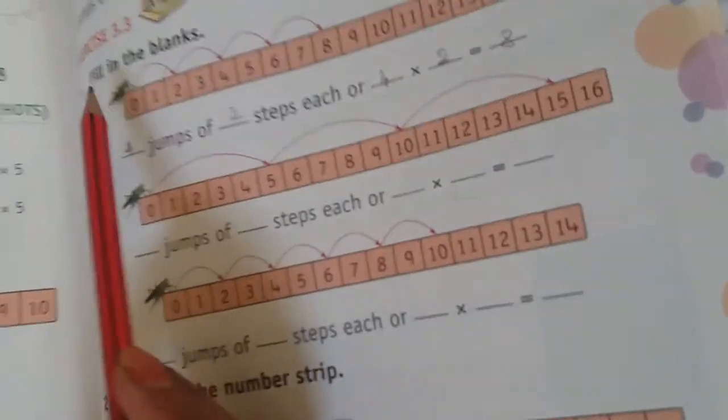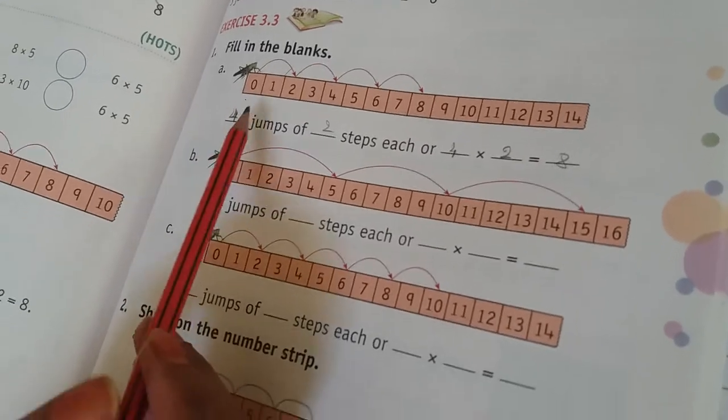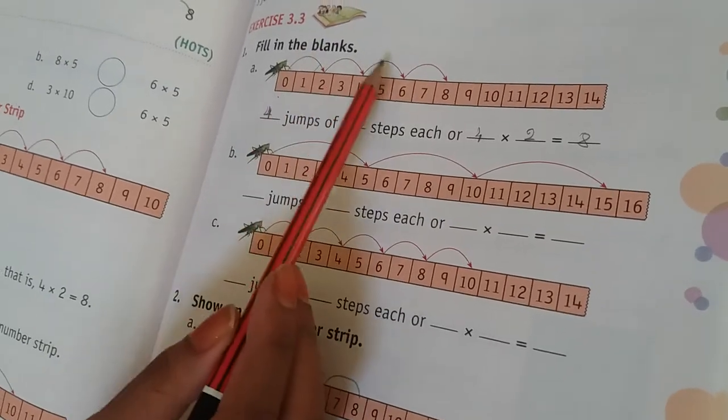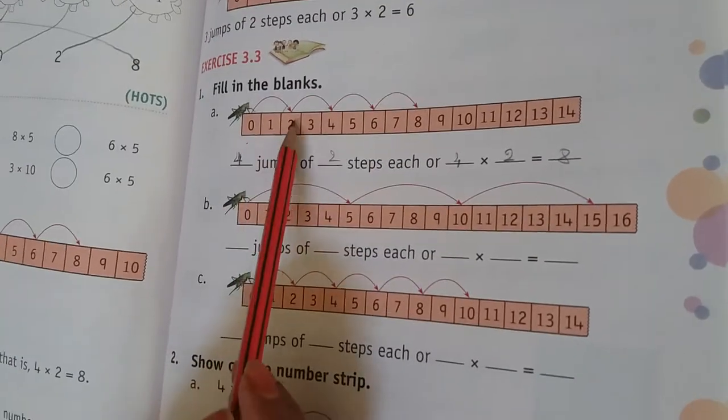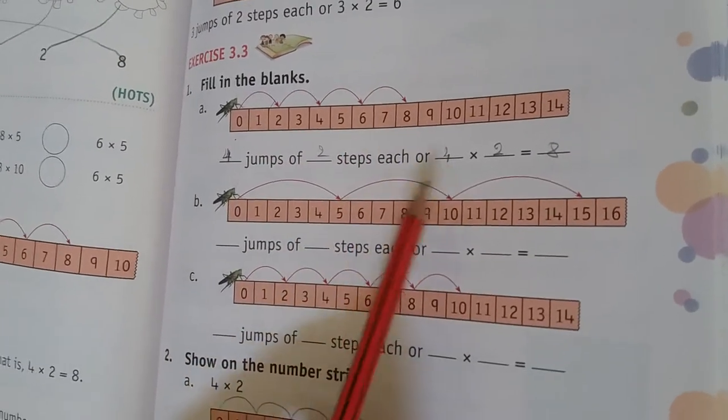Here, fill in the blanks, exercise number 3.3. Grasshopper, 1, 2, 3, 4 jumps. 4 jumps of 2 steps, 8 steps in all.